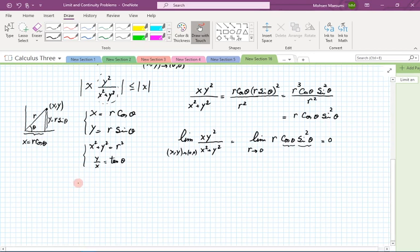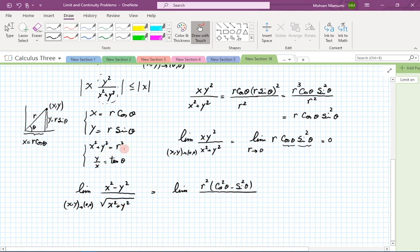Many problems of this nature are given. Let me do another one. It says what's the limit of, say, (x^2 - y^2) over radical (x^2 + y^2), and x and y going to 0. So we substitute. This becomes r^2 times (cosine^2 θ - sine^2 θ). Radical, this quantity is just r.